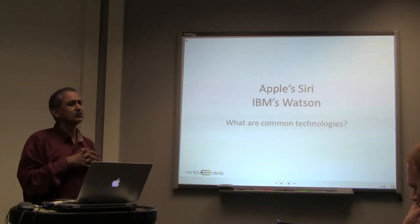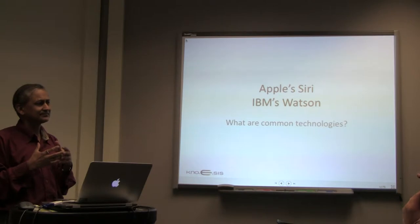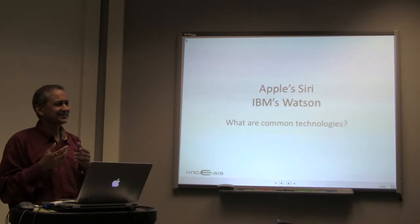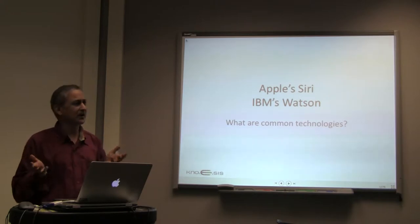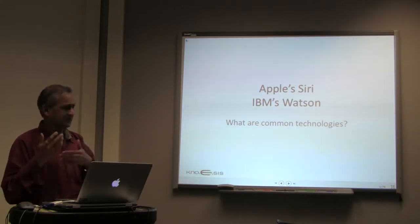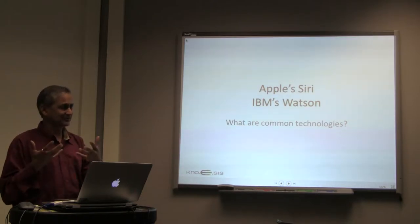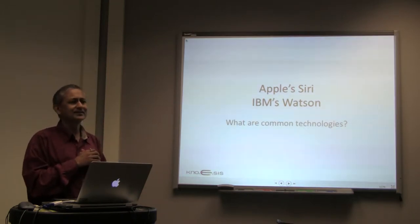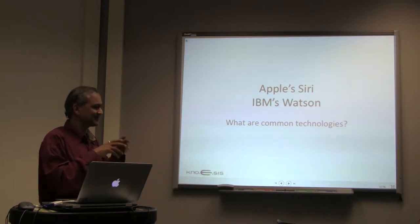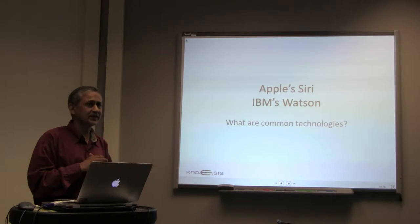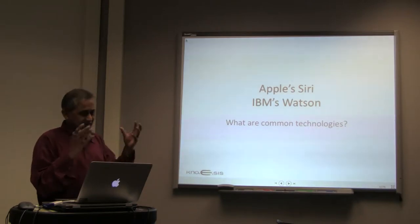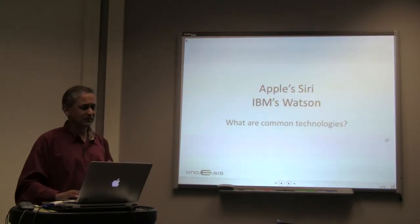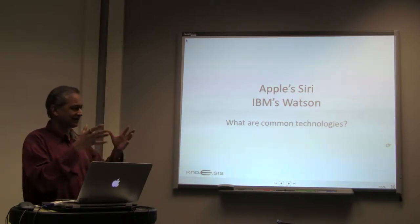In both Siri and Watson, they use background knowledge or ontology. One of the last persons to join the company named Siri before Apple acquired it is a person I know very well — David Martin. He is a knowledge representation person involved in building ontologies. So clearly some form of ontology and knowledge representation was very critical in Siri's work. The same is the case with Watson, where the software is trained with a lot of knowledge about that particular domain. That is what makes the system smarter.